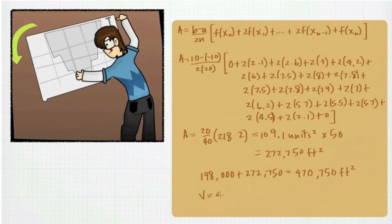To find the volume, Willis knows that all he has to do is multiply by the height of the volcano, which is 1,254 feet. When he does, he finds that the volume is a whopping 590,320,500 cubic feet.